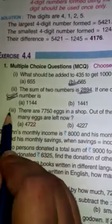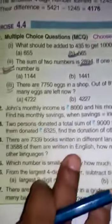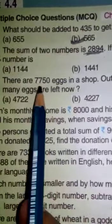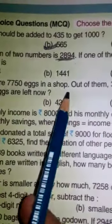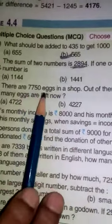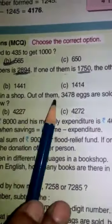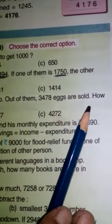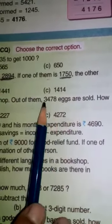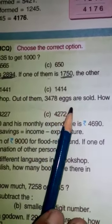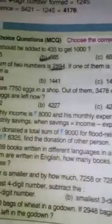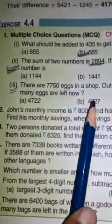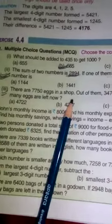Now, the second question number 2 is, sorry, third question is what? There are 7,750 eggs in a shop. Out of them, 3,478 eggs are sold. 3,478 eggs are sold. So, what is it?